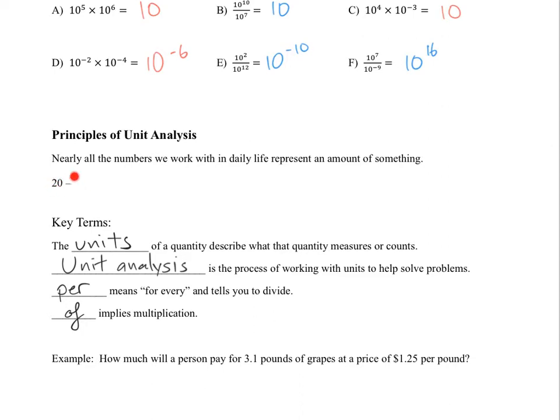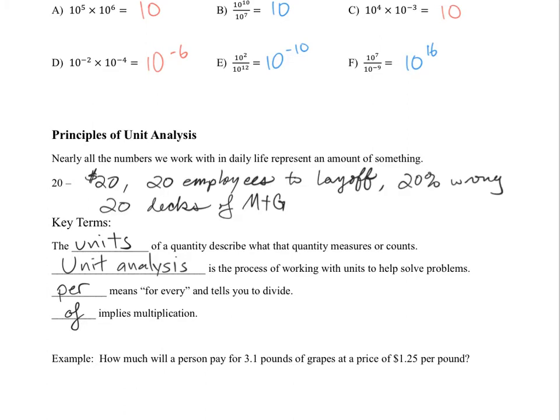When you look at this number here, 20, that number can mean many different things to many different people. That could mean 20 dollars, 20 employees to lay off when companies are going through a restructuring or downsizing, 20% wrong, is different from 20% right. Both of those mean very different things. Or 20 decks of Magic the Gathering cards. Yes, I'm a huge nerd. So like that being said, 20, this 20 can be meaning a lot of different things depending upon who you're talking to. So it's always important to know what the units are of the numbers you're working with.